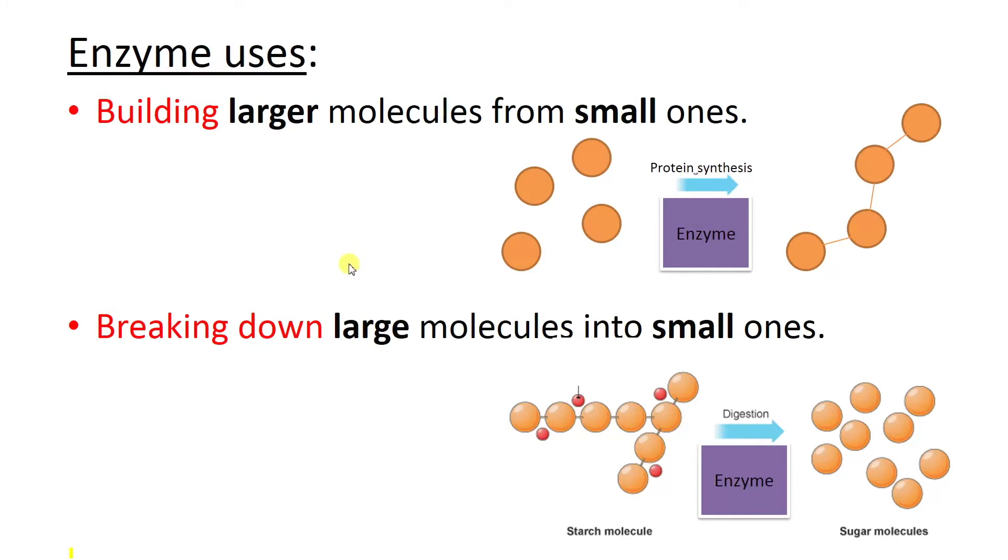Delving into this a little bit more now, one of the first things that enzymes are really useful for is building larger molecules from small ones. So here we've got an example of some molecules just on their own in free space. And then with the process of protein synthesis, they are going to become a fully joined protein. And how they do that is by using an enzyme to speed up this reaction. So the enzyme is kind of like the middleman making this reaction happen.